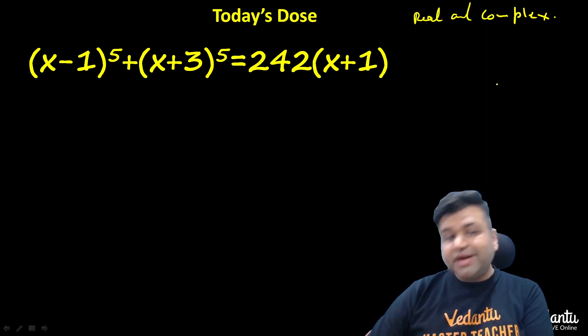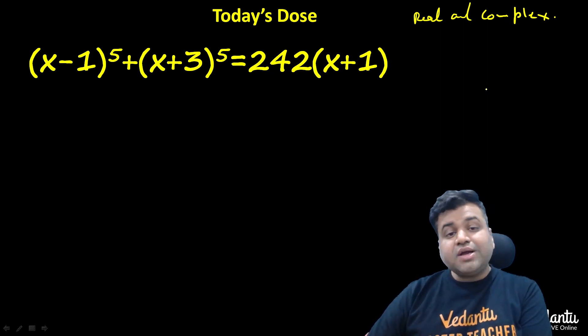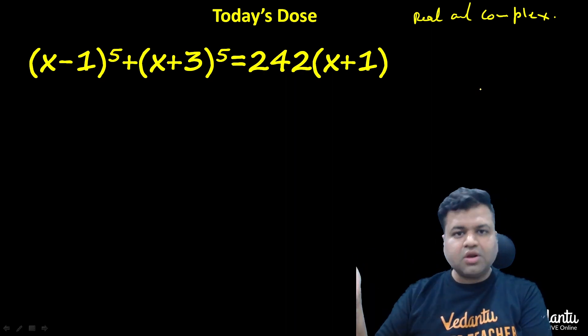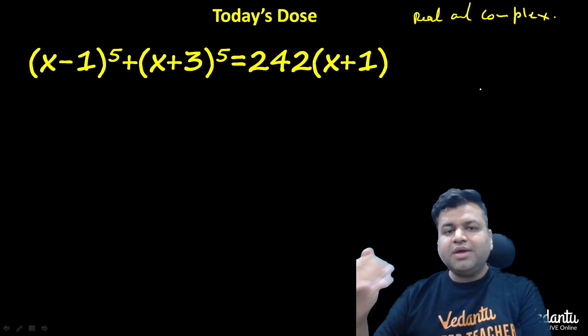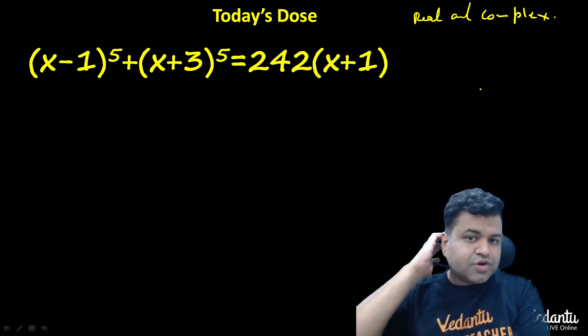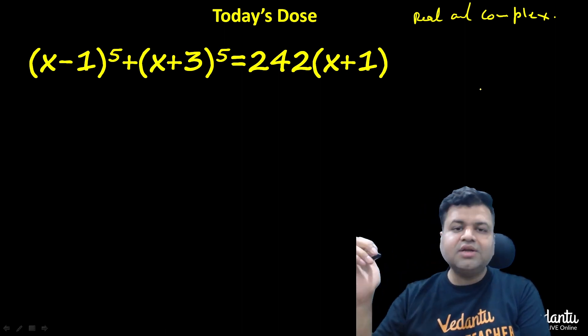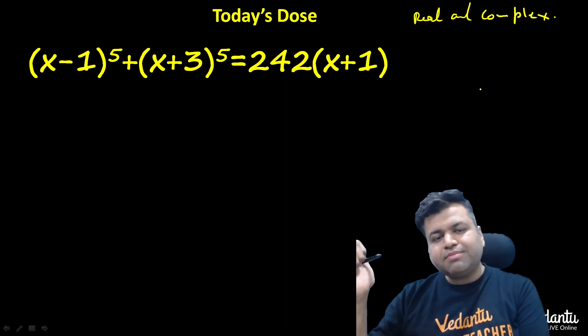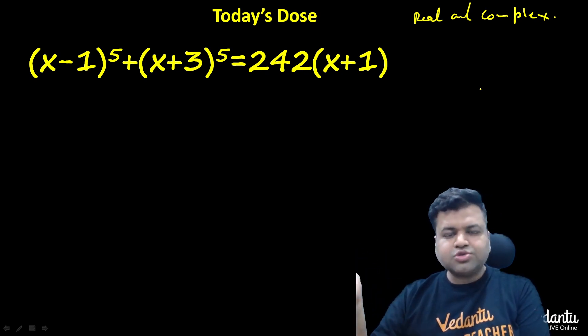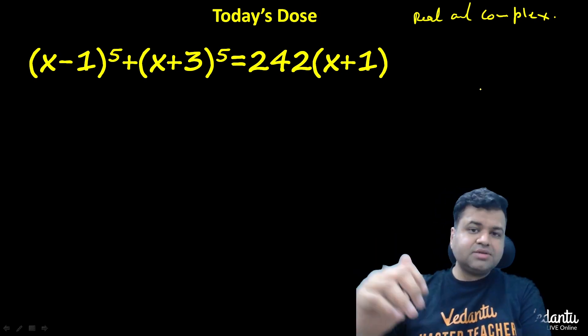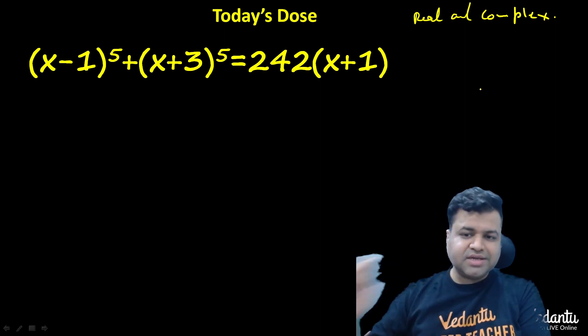When dealing with higher degree polynomials, generally one approach is hit and trial. For example, with cubic equations, we take a root from hit and trial, then we create a quadratic and solve that quadratic. Although there are methods for cubic, bi-quadratic, and quintic equations, often we can find some solutions through hit and trial. Or there can be another approach. Here we will use a great approach.